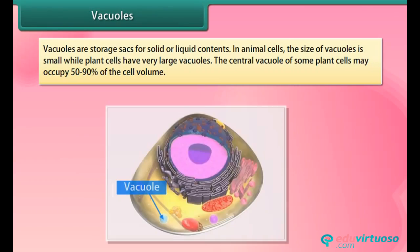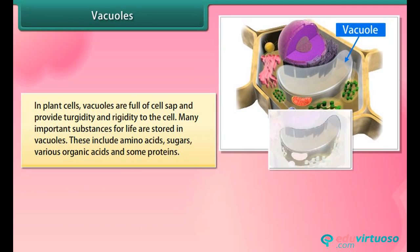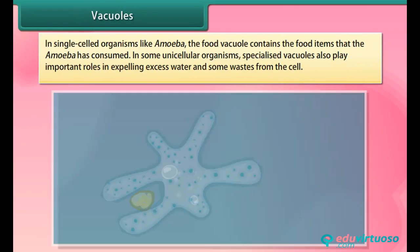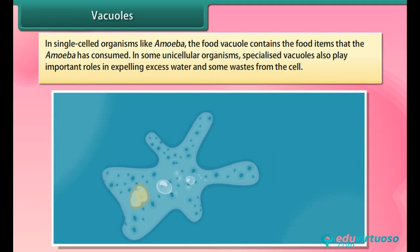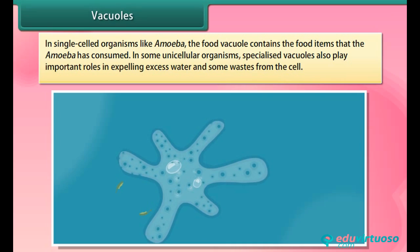Vacuoles are storage sacks for solid or liquid contents. In animal cells, vacuoles are small, while plant cells have very large vacuoles — the central vacuole of some plant cells may occupy 50 to 90 percent of the cell volume. In plant cells, vacuoles are full of cell sap and provide turgidity and rigidity to the cell. Important substances stored include amino acids, sugars, organic acids, and some proteins. In amoeba, the food vacuole contains food the amoeba has consumed. Specialized vacuoles in some unicellular organisms expel excess water and wastes.